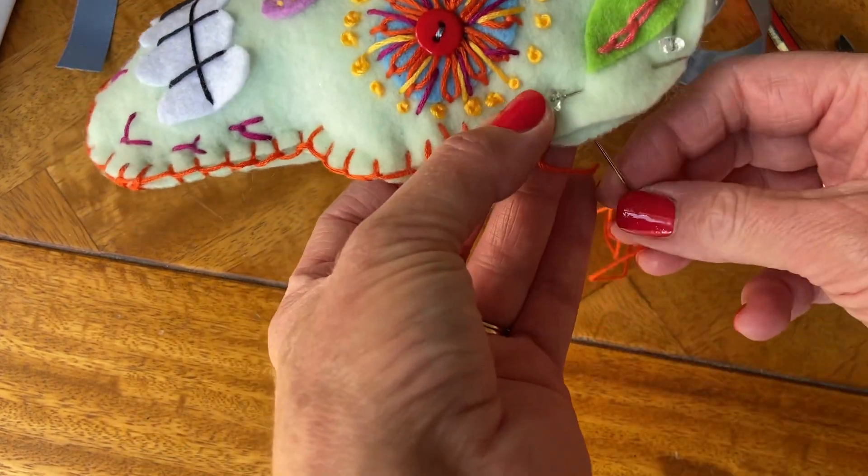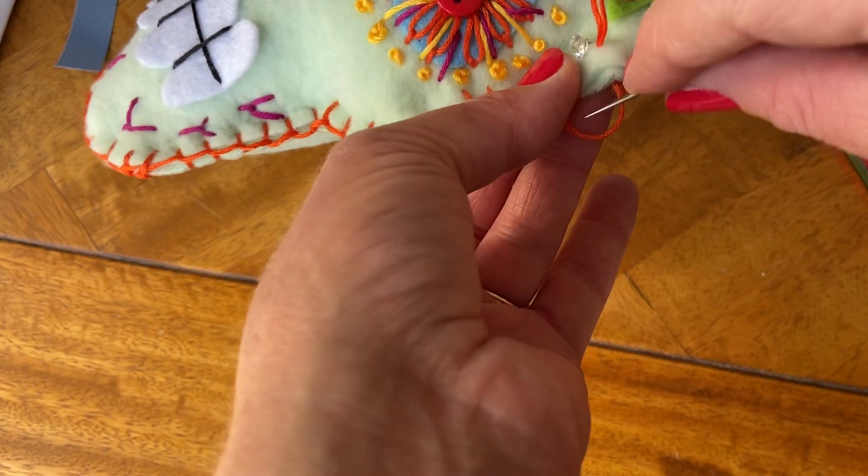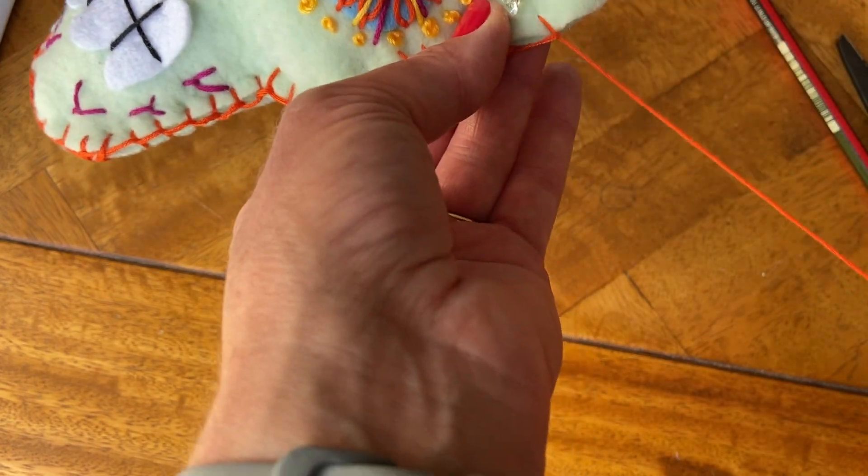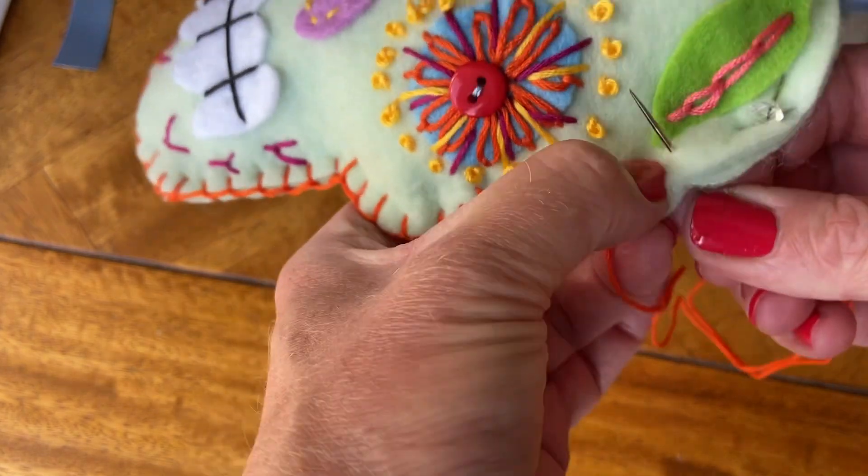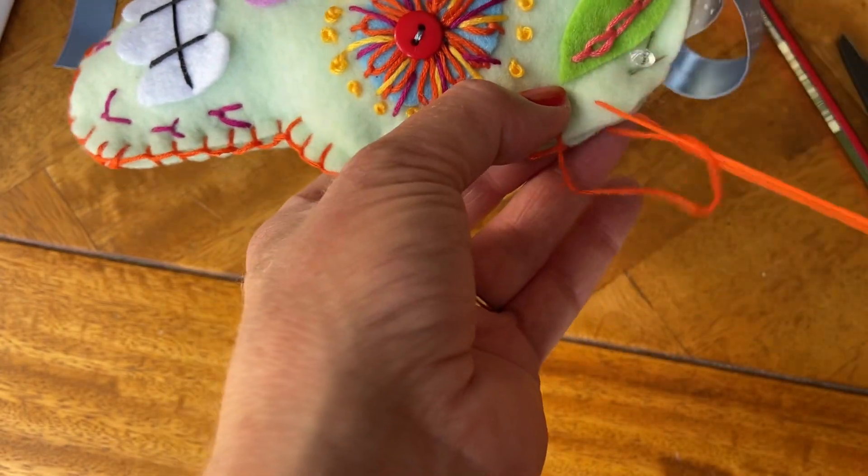Again, we're going with our blanket stitch, so coming from the bottom of our work, hooking that round, getting a nice little blanket stitch going all the way, just finishing off our edges, heading towards that ribbon.